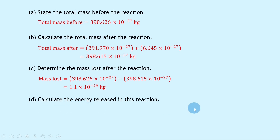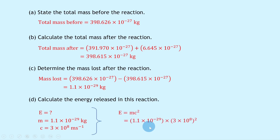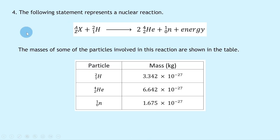For part d, we calculate the energy released in this reaction. We know the lost mass m is 1.1×10⁻²⁹ kg from part c, and the speed of light is 3×10⁸ m/s. Using E = mc² and substituting gives 1.1×10⁻²⁹ × (3×10⁸)², and putting that into your calculator gives 9.9×10⁻¹³ joules.